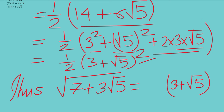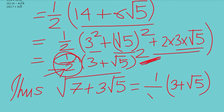Since we have a half outside the perfect square, when we take the square root of half × (3 + root 5)², we get (1 / root 2) × (3 + root 5). The square root of 1 is 1 and the square root of 2 is root 2, so we write it as (3 + root 5) / root 2, and with the plus-minus, that is ± (3 + root 5) / root 2. Finding the square root of these numbers was quite easy.